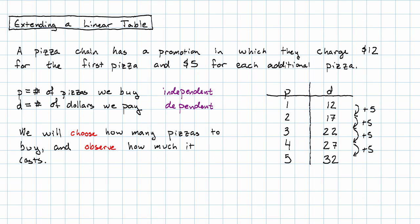What if we can't see the value of b in our table? What if we have an example like our pizza example? In this table, we can't see the value of d when p equals zero.